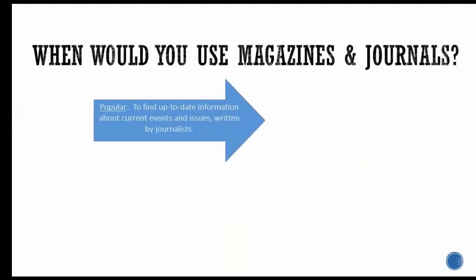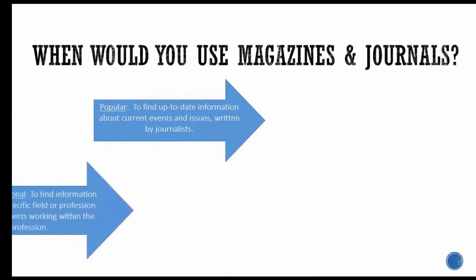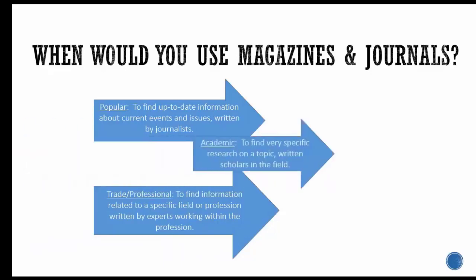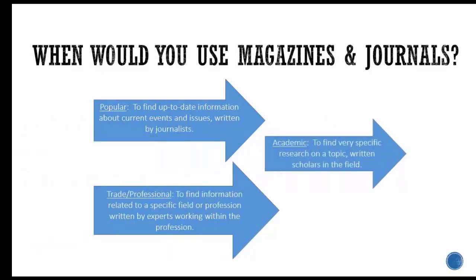You would use popular magazines to find up-to-date information about current events and issues written by journalists. You'd use professional magazines to find information related to a specific field or profession written by experts working within the profession. You'd use academic journals to find very specific research on a topic, written by scholars in the field.